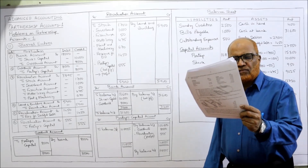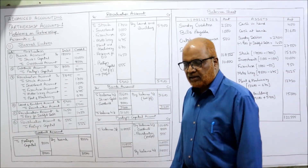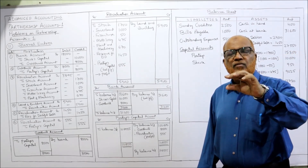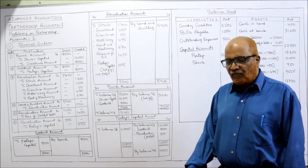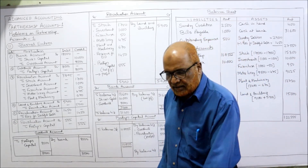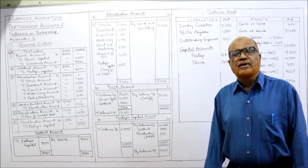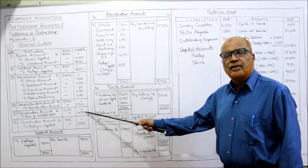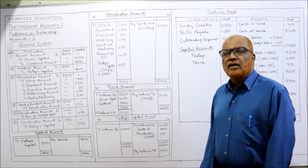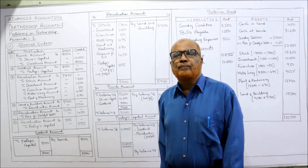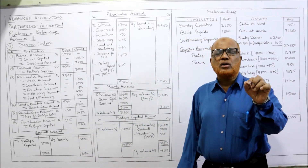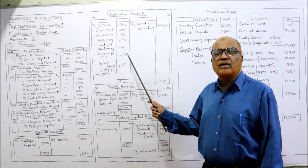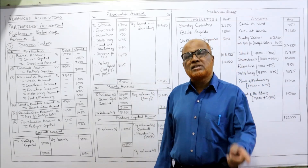The next adjustment is creating a reserve for doubtful debts at 5% of sundry debtors. Sundry debtors are ₹29,000; 5% of ₹29,000 = ₹1,450. Entry: Revaluation Account Debit ₹1,450 — To Provision for Doubtful Debts ₹1,450 — being provision for doubtful debts created. After passing this fifth entry, we need to prepare the revaluation account to determine profit or loss.